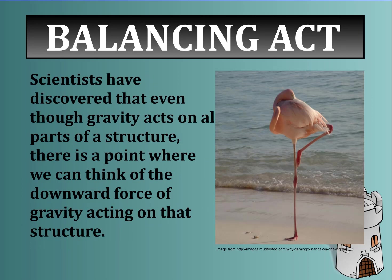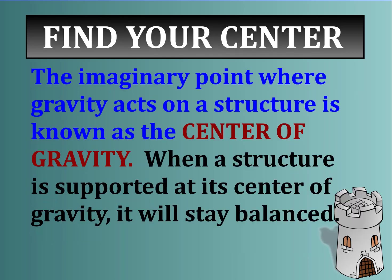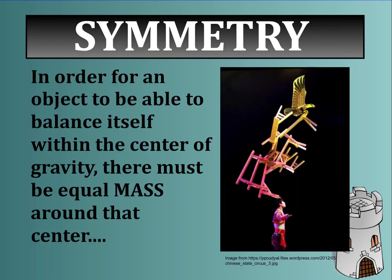Scientists have discovered that even though gravity acts on all parts of a structure, there is a single point where we can think of the downward force of gravity acting on that structure - for example, on a flamingo. This imaginary point where gravity acts is known as the center of gravity. When a structure is supported at its center of gravity, it stays balanced. In order for an object to balance itself, there must be equal mass around that center.